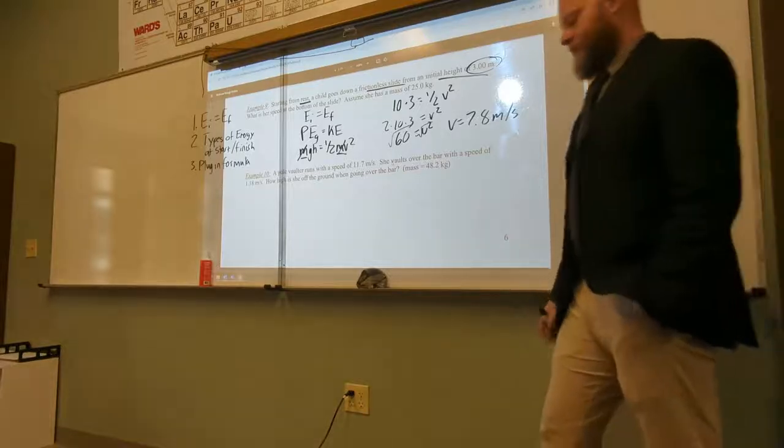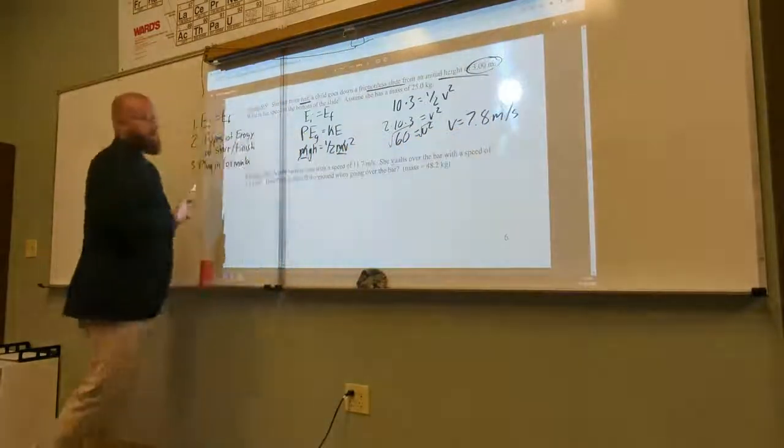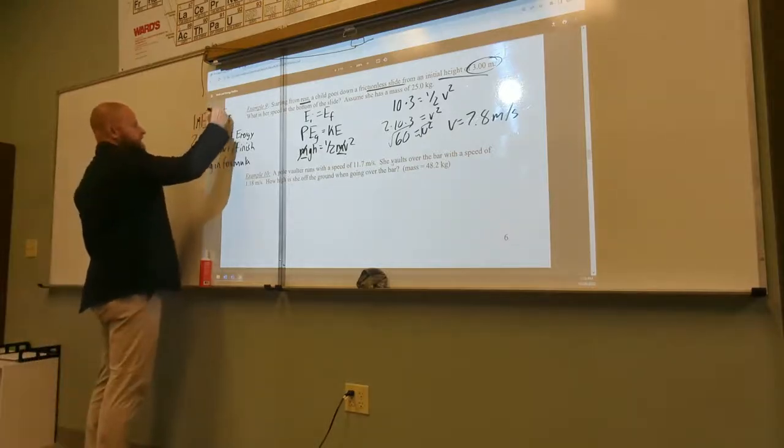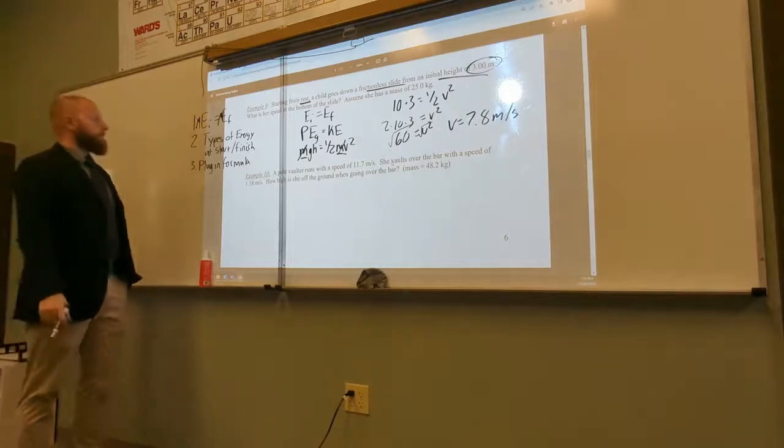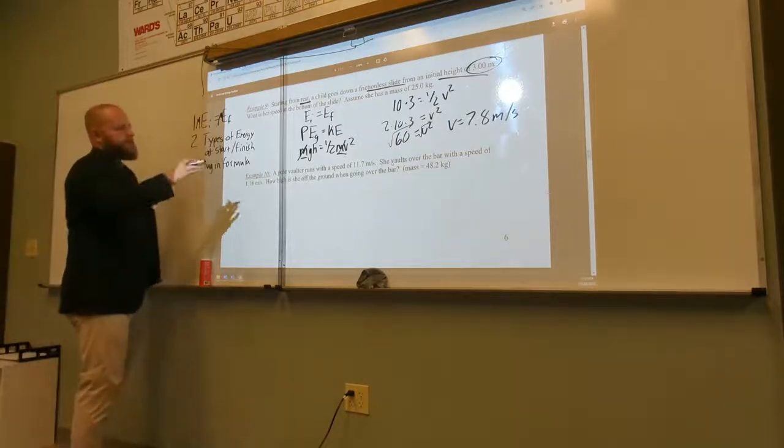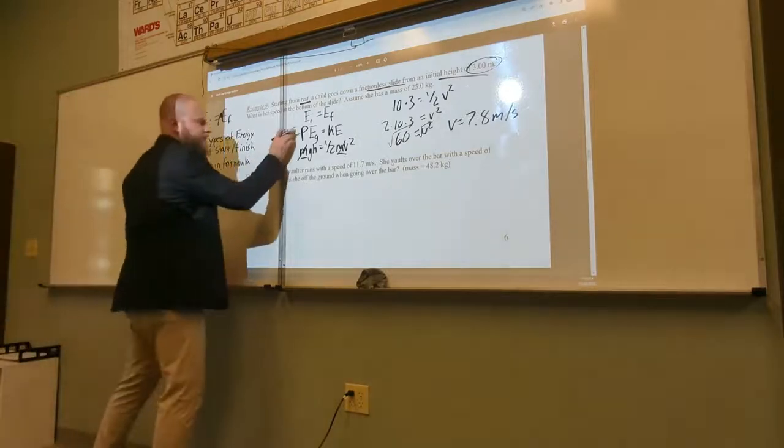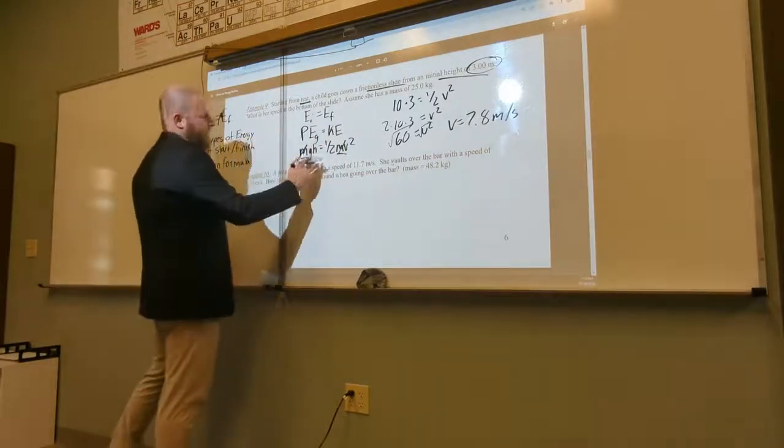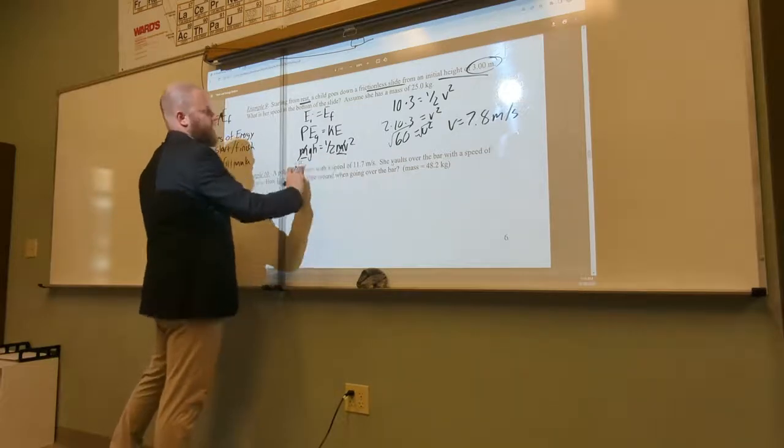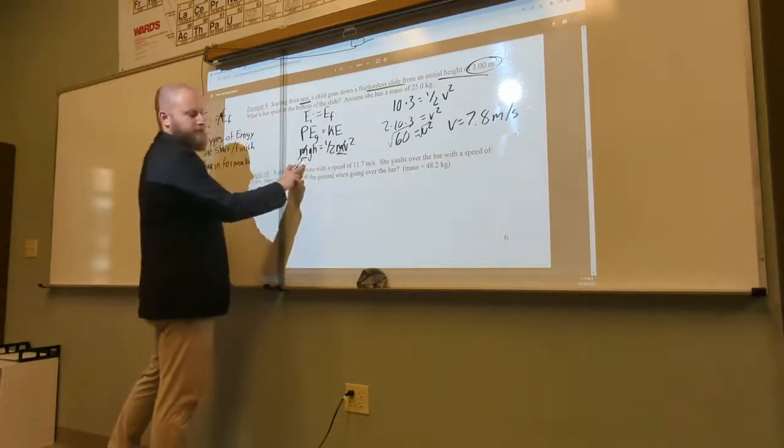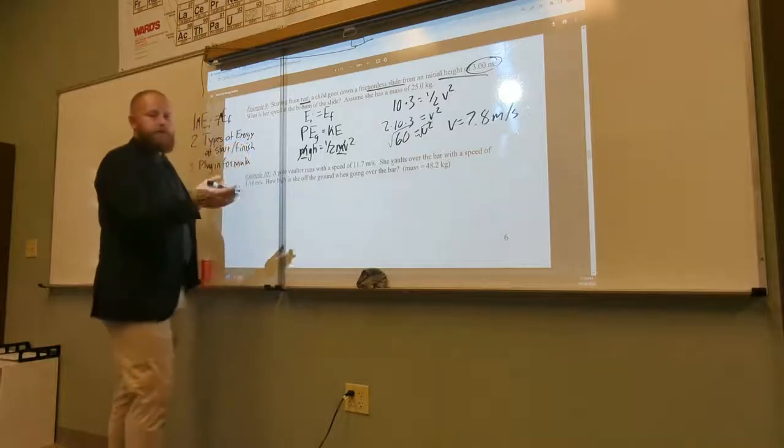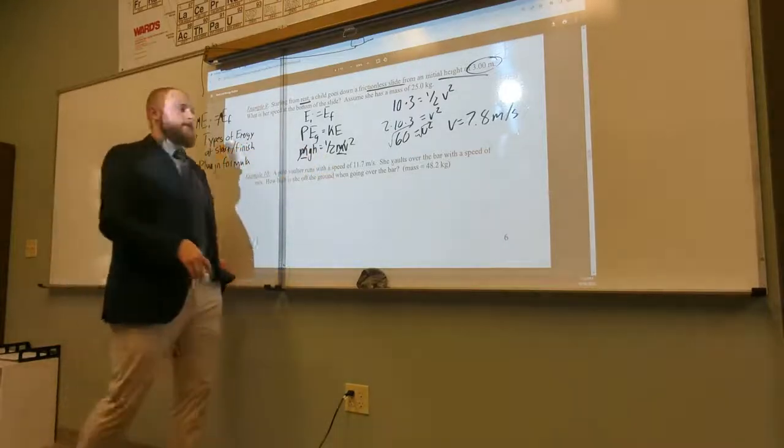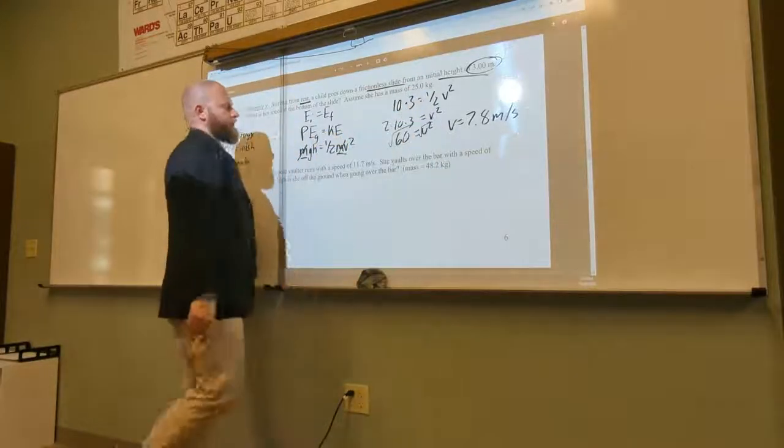So remember, our first step, EI equals EF. If you wrote MEI, mechanical energy, and MEF, that's no problem with that. Remember, then we need to plug in the types of energy we have. What types of energy are we starting with? What types of energy are we ending with? Then, next, we're going to plug in the equation for each. What's my equation for my PEG? What's my equation for my KE? So every time you see KE, you're writing one-half MV squared. Then, finally, you can plug in numbers, and then go ahead and solve.